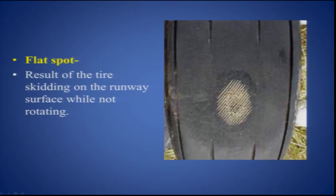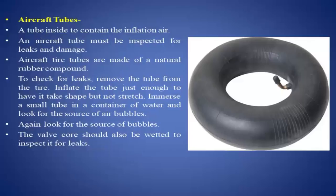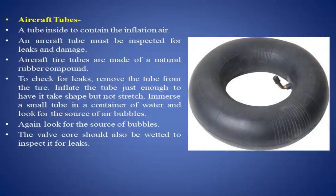Aircraft tubes contain the inflation air inside the tyre. An aircraft tube must be inspected for leaks and damage. Aircraft tyre tubes are made of a natural rubber compound. To check for leaks, remove the tube from the tyre, inflate it just enough to give it shape but not stretch it, then immerse it in a container of water and look for air bubbles. The valve core should also be wetted to inspect it for leaks.